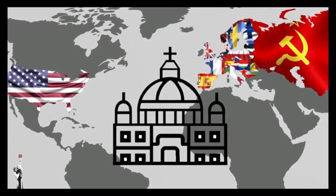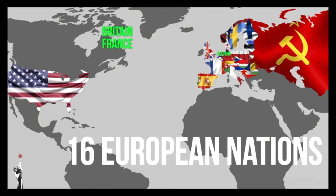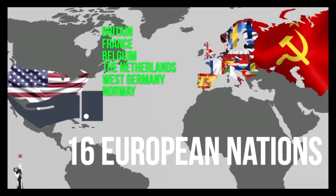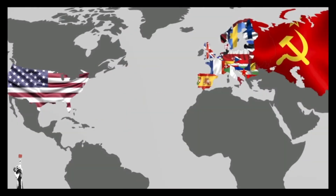The aid was sent to 16 European nations including Britain, France, Belgium, the Netherlands, West Germany, and Norway. The plan was very effective and the US not only received support from these countries but their influence in these countries grew substantially. In response, the Russians also implemented their own plan called the Molotov Plan, but this was less successful compared to the Marshall Plan.